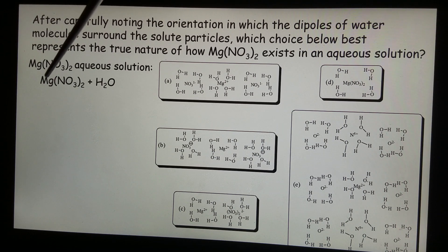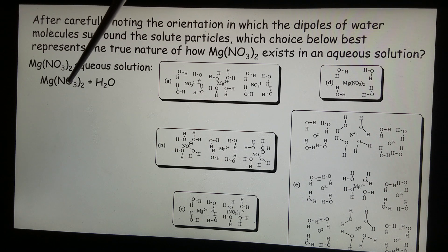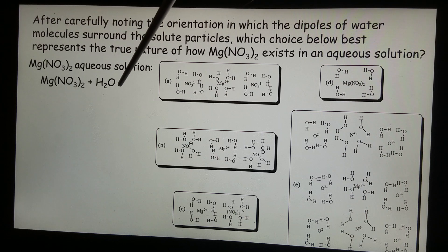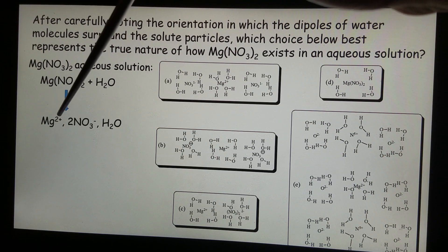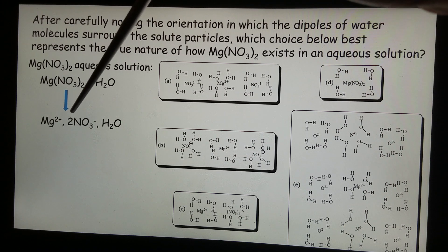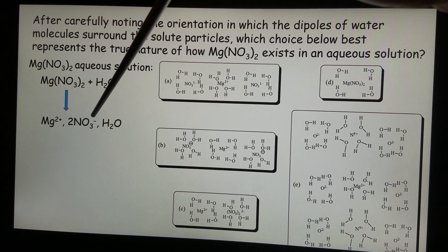Magnesium nitride, that's an ionic compound. Once it dissolves in water, we should see magnesium 2 plus ion and nitride ion.